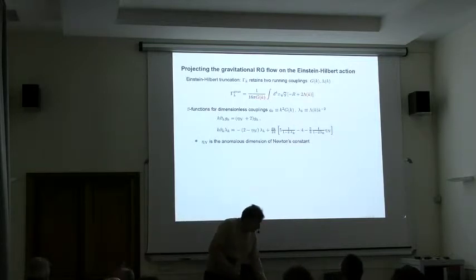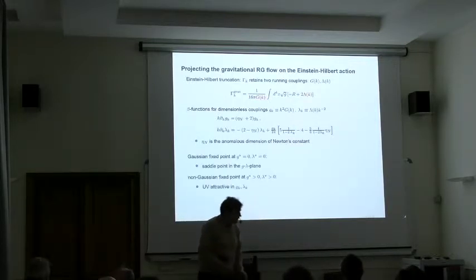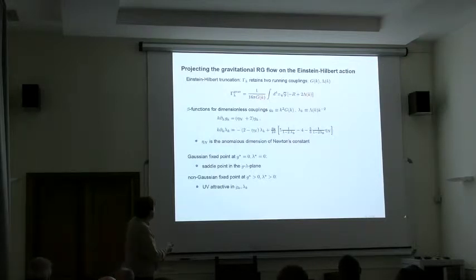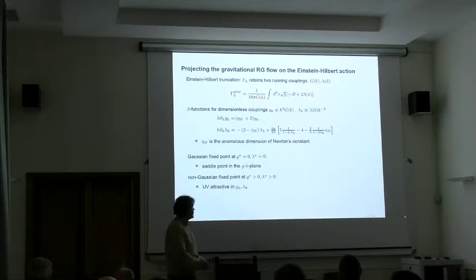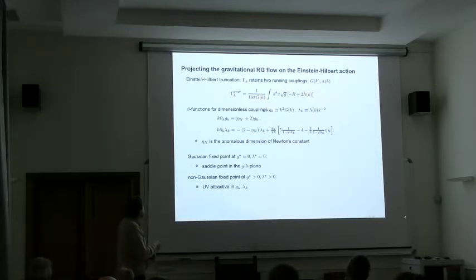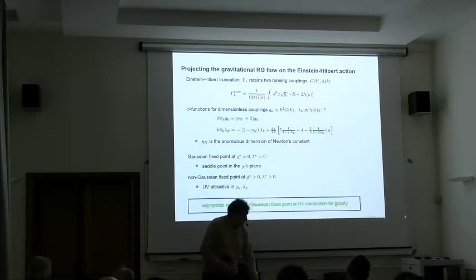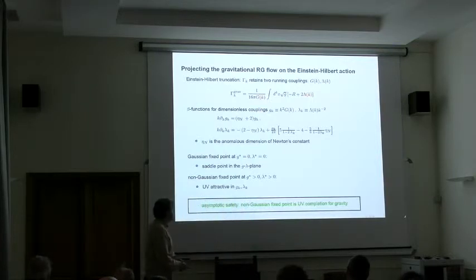First thing, we are interested in the fixed point structure of this equation. We get a Gaussian fixed point which corresponds to the free field theory. This is the one that we have seen at the beginning of the talk. But it turns out that there is also a non-Gaussian fixed point. This is UV attractive for both of our coupling constants. This would be a fixed point that is actually suitable for asymptotic safety and could be the UV completion of your theory.